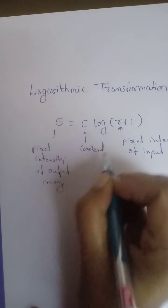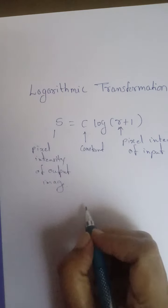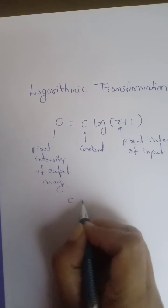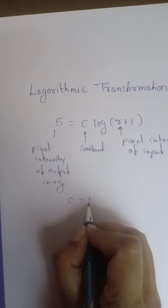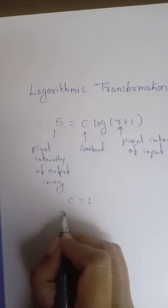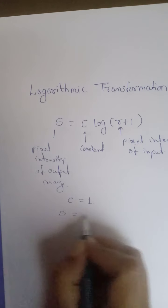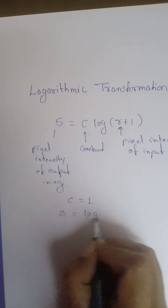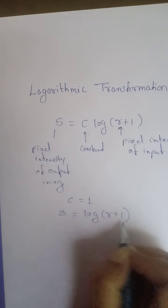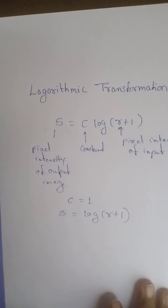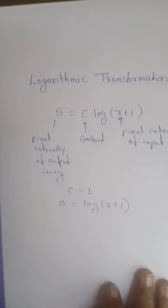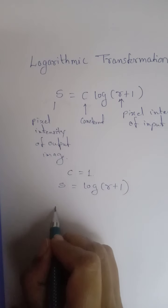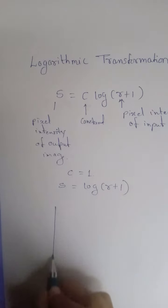Generally the value of c is equal to 1. So if we assume c = 1, the formula becomes s = log(r + 1). If we plot this formula on the graph, we get something like this.